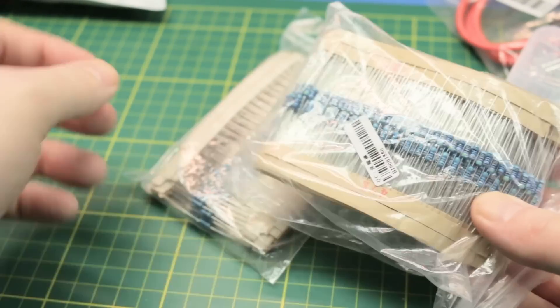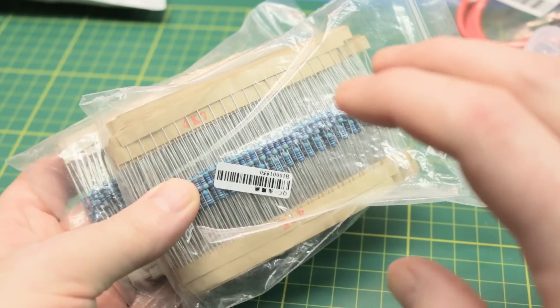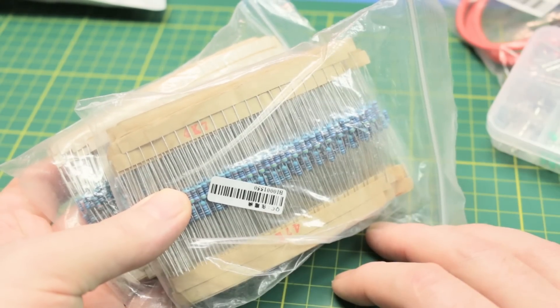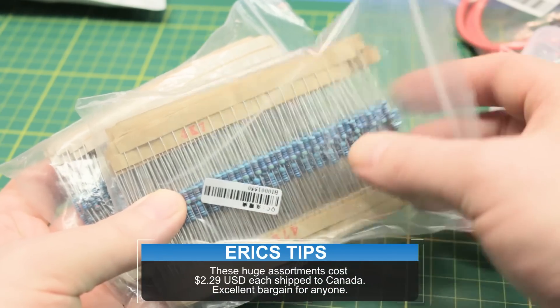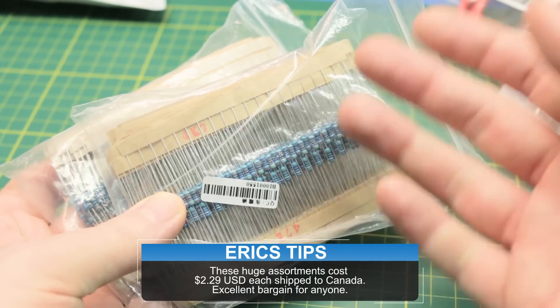Here is resistor assortments. Two sets. Same thing, repeated twice. They're so cheap to buy a huge set of resistors. You're better off just to buy a whole set, like a whole assortment, rather than ordering piece by piece sometimes, because this is cheaper.